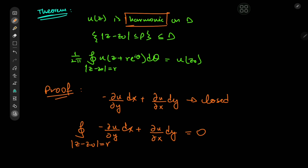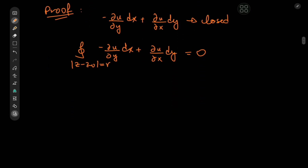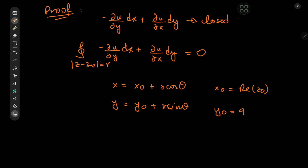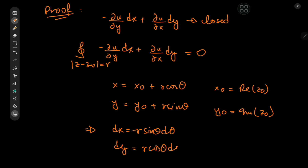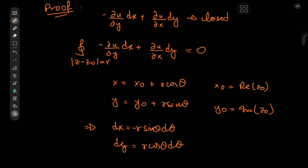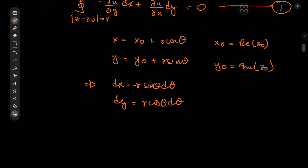And that is quite nice, but what's even nicer is the fact that we're integrating on a circular path, which means a very nice parameterization is available to us. We have x equal to x-naught plus r times cosine theta, and y equal to y-naught plus r times sine theta, where x-naught is the real part of z-naught and y-naught is the imaginary part of z-naught. Differentiating gives us dx equal to r times negative sine theta d-theta, and dy equals r times cosine theta d-theta.